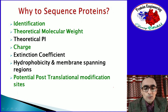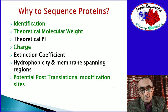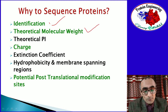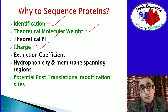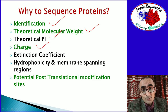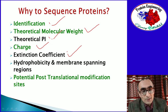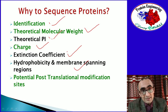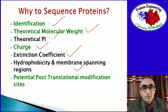Why determine the sequence of a protein? The most important reason is to identify the protein. If you have the sequence available you can calculate theoretical molecular weight, theoretical isoelectric point, the charge on the protein (whether it is acidic or basic), and the extinction coefficient. Hydrophobicity and membrane-spanning regions are also understood from the primary structure sequence, and you can also identify potential post-translational modification sites if they are present in the protein.